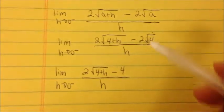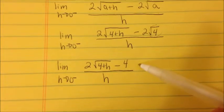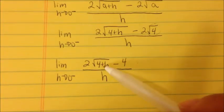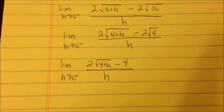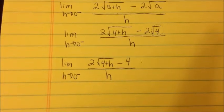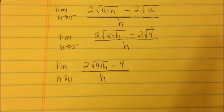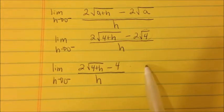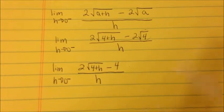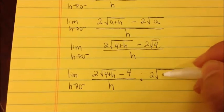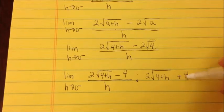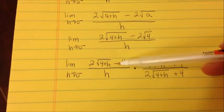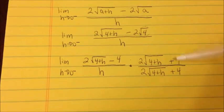Now we're stuck because the h's won't cancel due to the square root. To fix this, we use the conjugate — from algebra 2 and precalculus, multiplying by the conjugate eliminates the square root by removing the middle term. The conjugate of 2 square root of 4 plus h minus 4 is 2 square root of 4 plus h plus 4. We multiply numerator and denominator by this conjugate, which is legal since it equals 1.